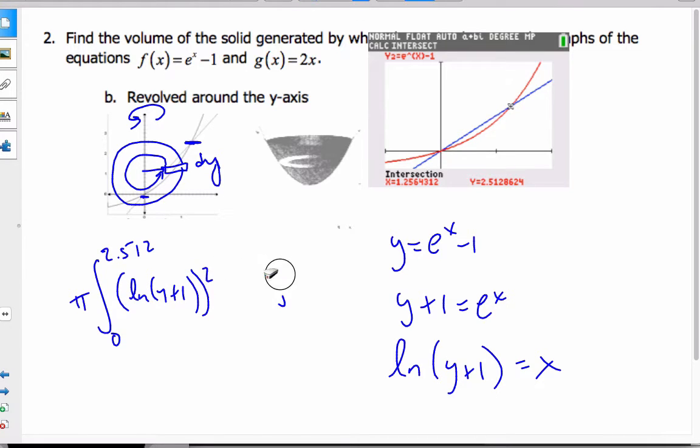And so my outside radius is ln y plus 1 squared minus, if I take y equals 2x, my inside radius will be y over 2. So I have y over 2 squared dy. And this is going to be my volume when I rotate around the y-axis.